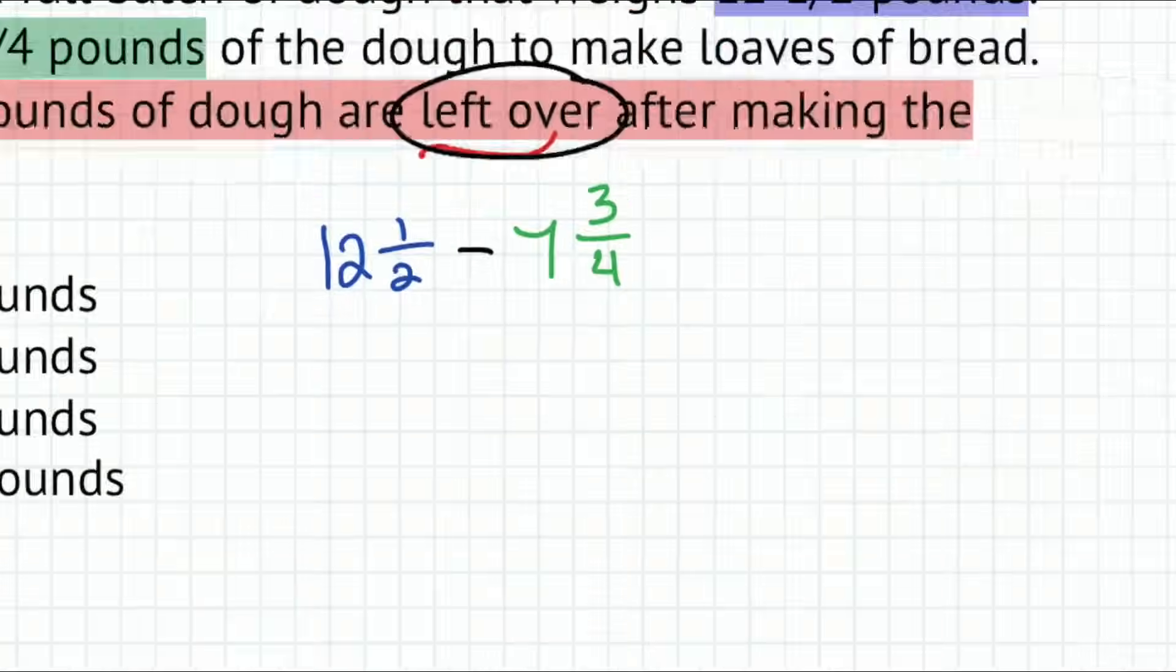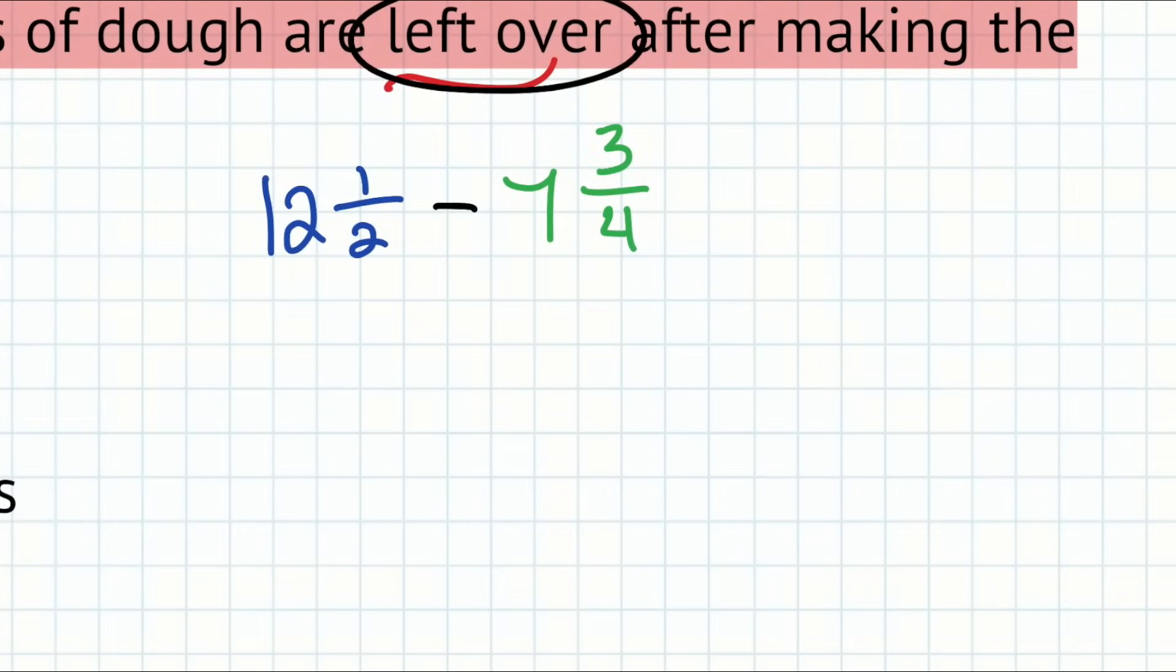So here we are 12 and a half minus seven and three quarters. Let's get it in our business. So here we just need to remember the rules for fractions. How do we subtract fractions? First of all, we need to make sure that we have the same denominator. We don't have the same denominator here, which means that we're not really talking about the fractions in the same sort of pieces or slices.